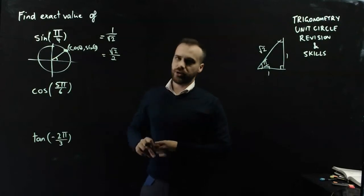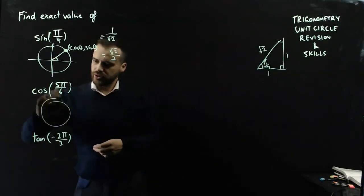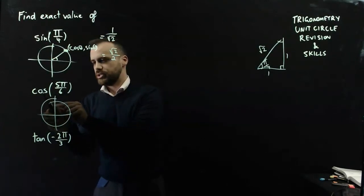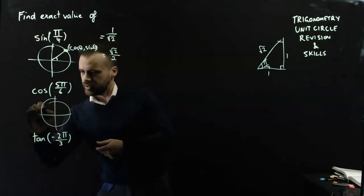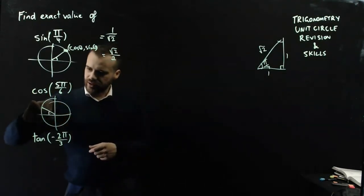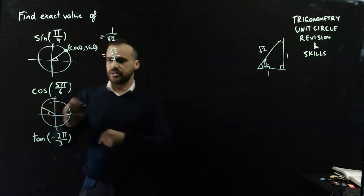This next one here, cos 5π on 6, if I draw it on a unit circle, it's going to look like π on 6, 2π on 6, 3π on 6, 4π on 6, 5π on 6, something like that, which is 150 degrees. This angle here is just π on 6.